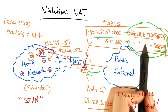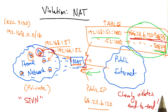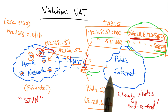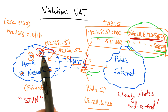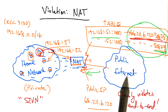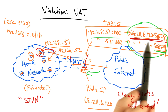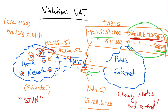Once that entry is created, we now have a globally routable address and port to which devices on the public internet can send traffic. These devices somehow have to learn that public IP address and port that corresponds to that service.